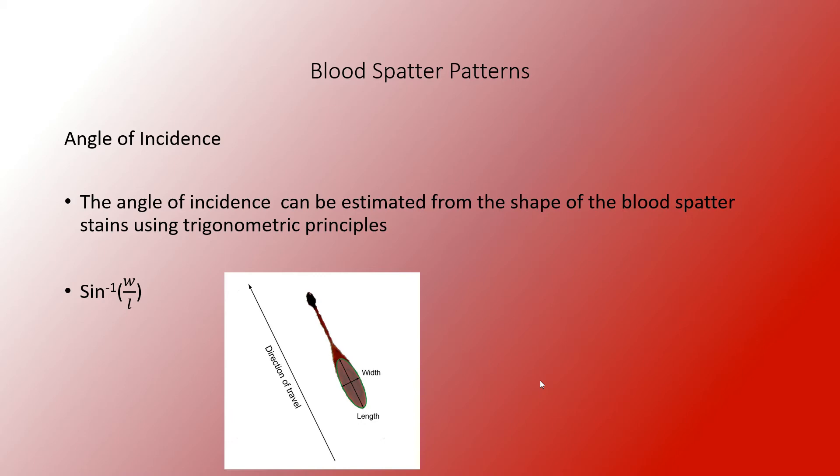Also, weather plays a role. If it's raining out, it will impact how long this evidence will stay there and how reliable it is, because blood droplets can be altered as more liquid comes in with rain. In snow, you can still see patterns but it just changes what you see.